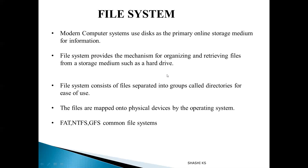Different files in the file system are grouped into categories called directories — in Windows, we call these folders. Files may be categorized into directories for ease of use. A file is a logical storage unit, and the data stored in files is actually stored on physical devices called secondary memory. The OS is responsible for mapping the logical files onto the real physical secondary storage devices.